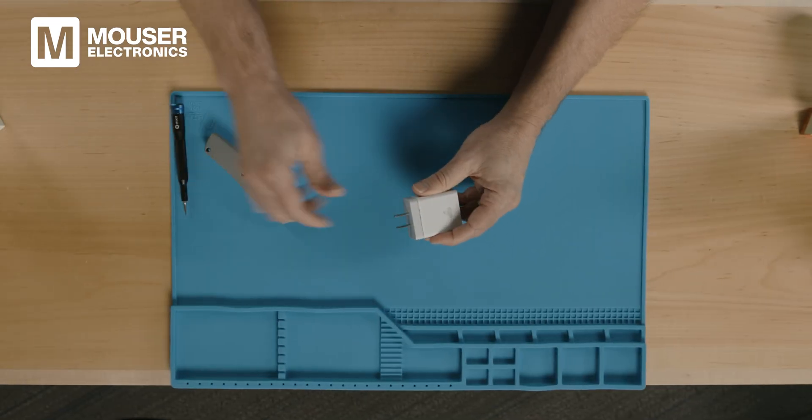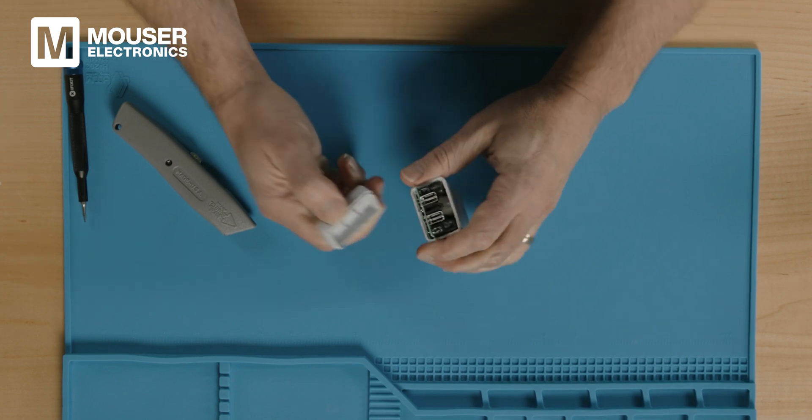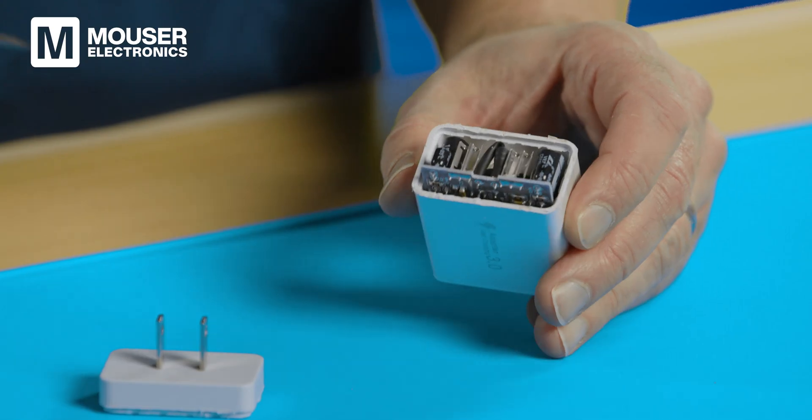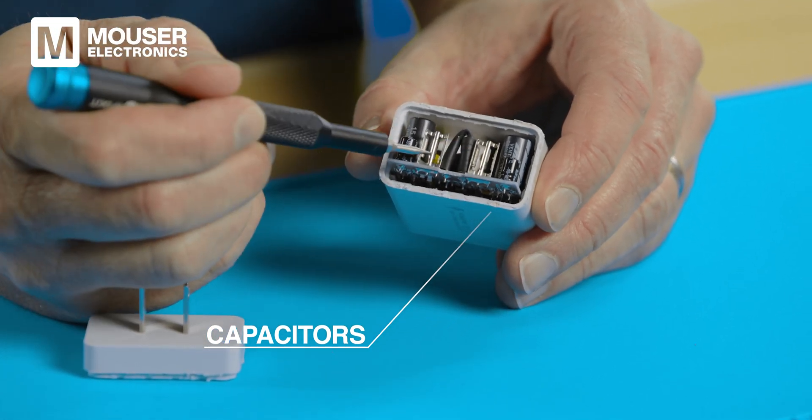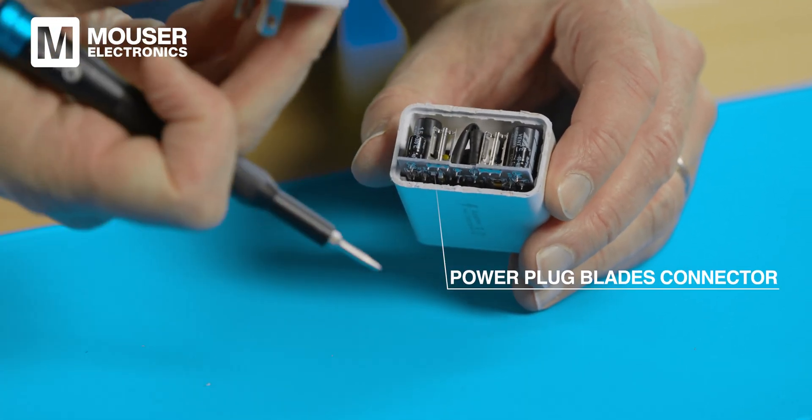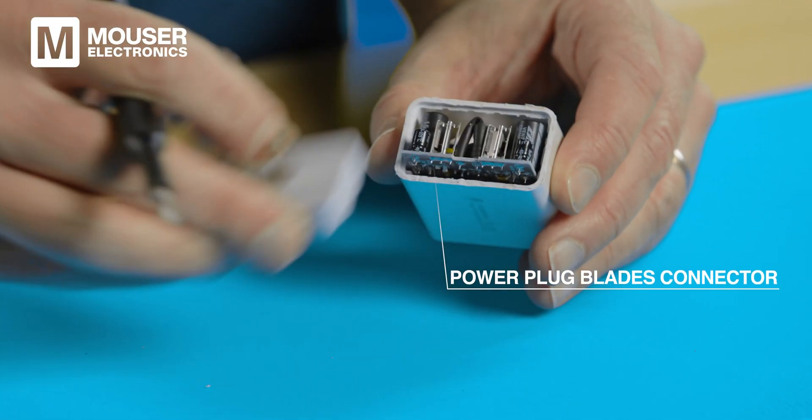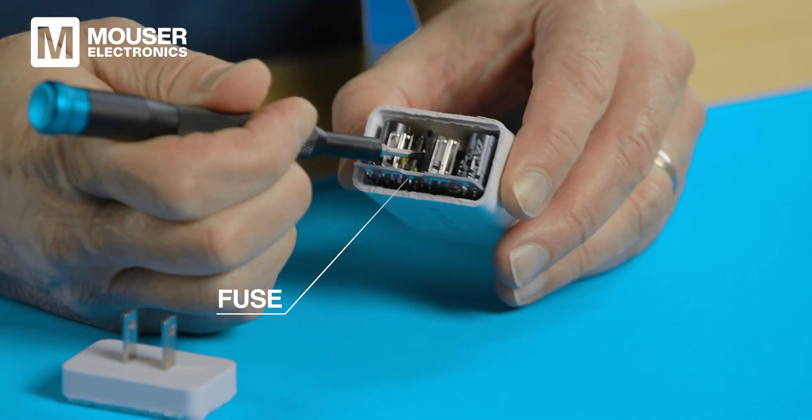All right, I finished cutting all around the outside of this, and now we're going to pry it off and look inside. Looking inside, we see a bunch of capacitors here on the outside edges, and just inside them, we have these vertically mounted connectors. This is where the power blades slide in and connect. And then in the middle here, we've got a fuse.